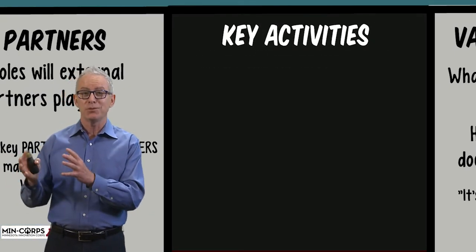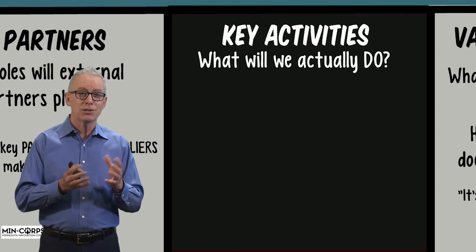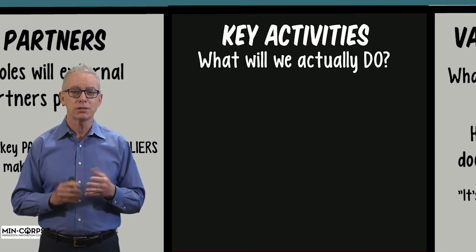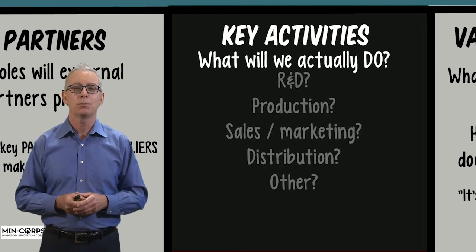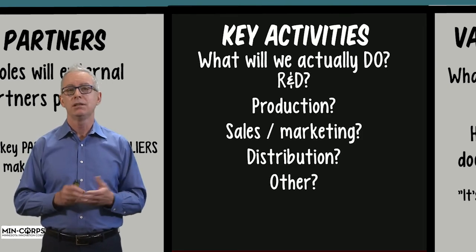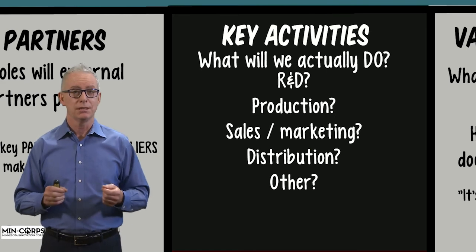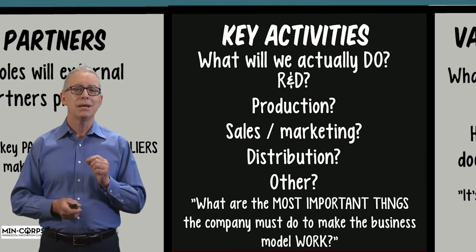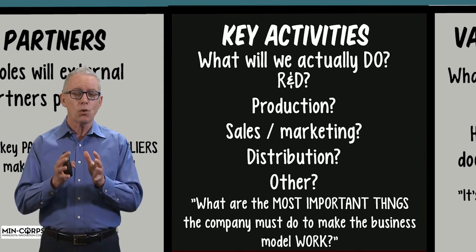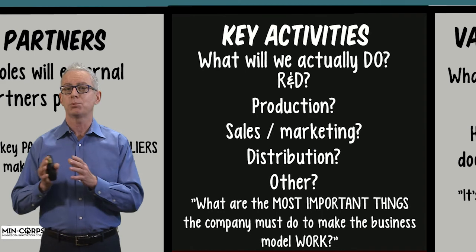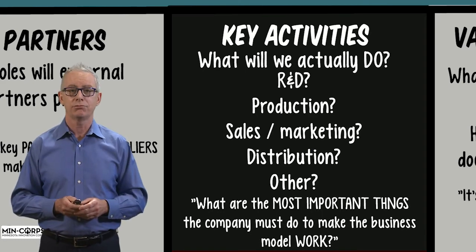You know what the jobs are to be done and the key resources required, and you know what partners can do for you. Now, what do you have to do yourself? What is the most important differentiating value that you have? This might include research and development, production, sales and marketing, or distribution. But typically it's the core differentiating capability that you have to own and protect that you'll want to do yourself, and then rely on partners to do the rest.